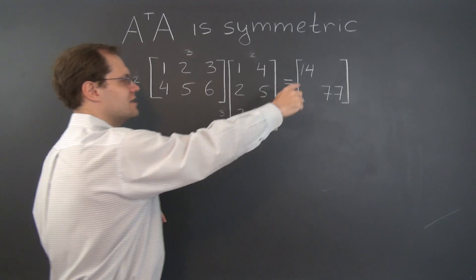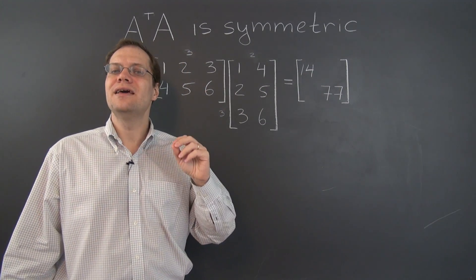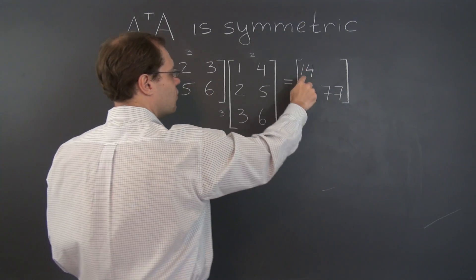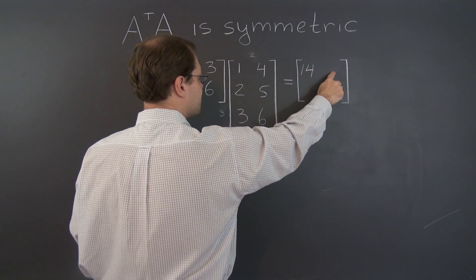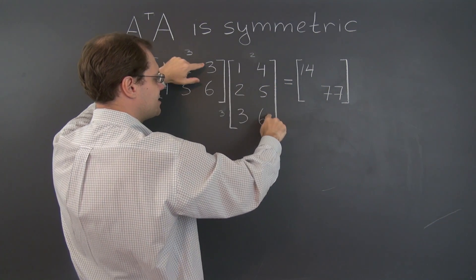All right. Now let's determine these two entries, and hopefully they'll be equal to each other. Let's see what we get. Let's start with this entry. This entry equals 4 plus 10 plus 18.